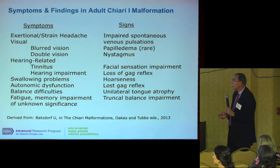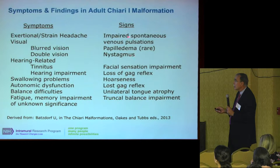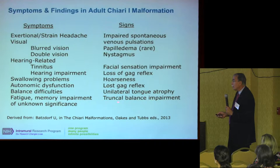In adults it's very similar: exertion- and strain-type headaches, blurred vision, tinnitus, swallowing problems, and autonomic dysfunction. The signs doctors look for include swelling of the optic nerve, nystagmus, loss of the gag reflex, hoarseness, and impaired balance.